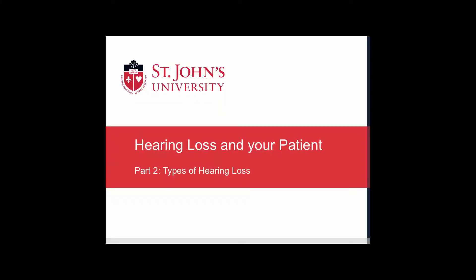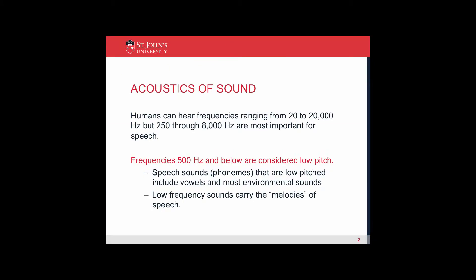Part 2: Types of Hearing Loss. Acoustics of Sounds. Humans can hear frequencies ranging from 20 to 20,000 Hz, but 250 to 8,000 Hz are most important for speech. Frequencies 500 Hz and below are considered low-pitched. Speech sounds that are low-pitched include vowels and most environmental sounds. Low-frequency sounds carry the melodies of speech.